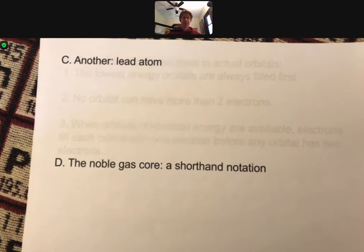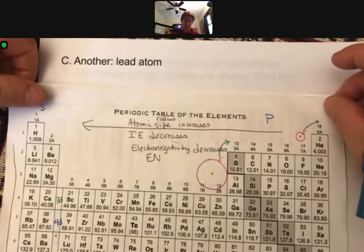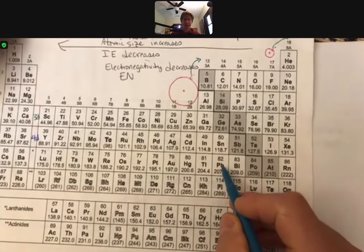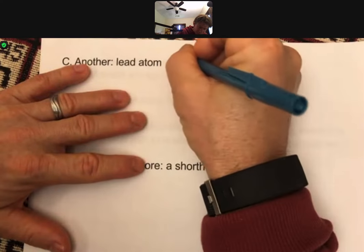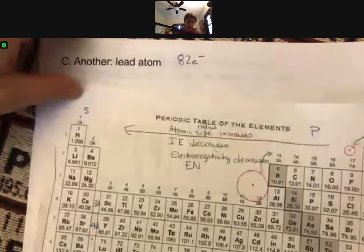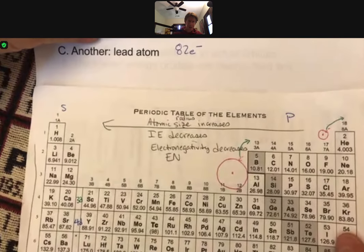This electron configuration is going to be much longer. It's for the lead atom. Lead is Pb and Pb is element number 82. So there will be 82 electrons and I'm just going to use my regular old periodic table this time and see how we do since that's what we're going to have typically on exams.